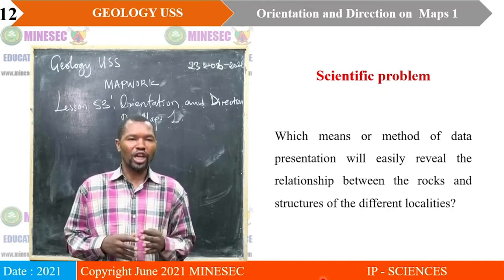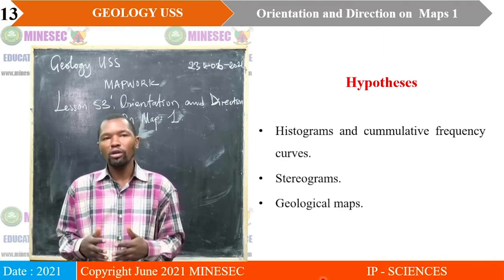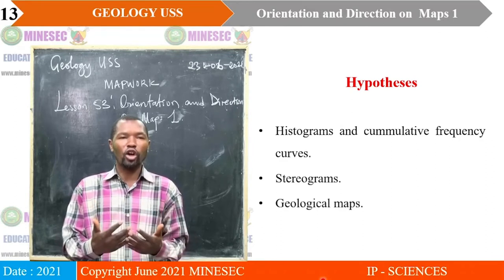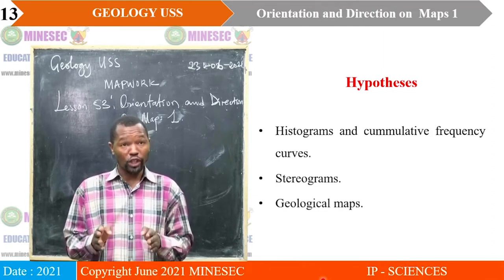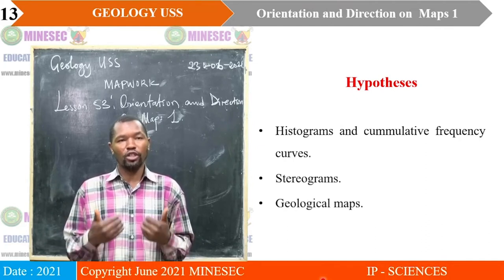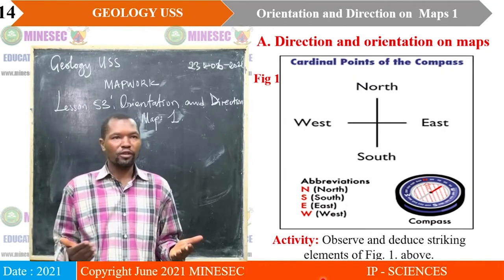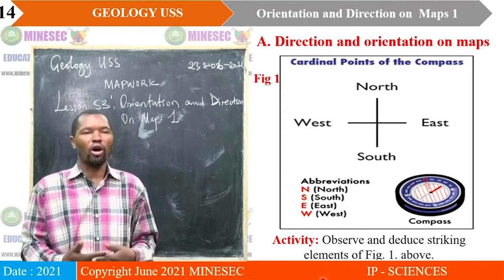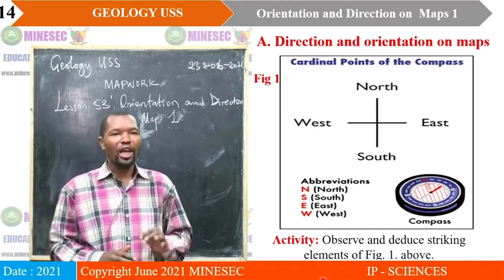Is it possible to use histograms and cumulative frequency curves, or use stereograms, or use geological maps? Whichever is the method, we shall discover it in the course of our lesson, and we will come back to it towards the end to know which method can relate the petrographic information and the structural information collected during field work. Now take a look at figure one, which will guide us to the lesson on direction and orientation on maps. Observe and deduce the striking elements of figure one.